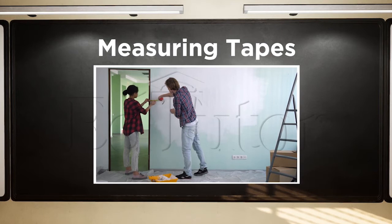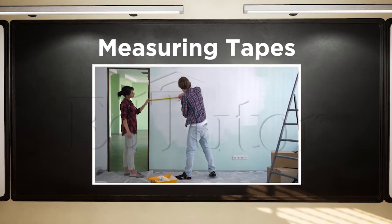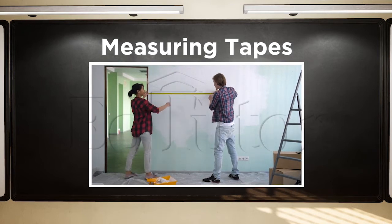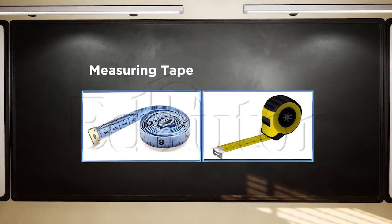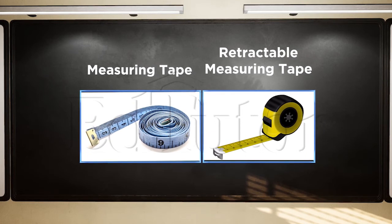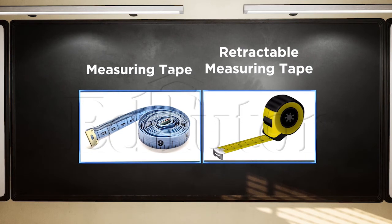Measuring tapes can be used to measure distances or lengths of up to several hundred meters. There are two different types of measuring tapes: one is the measuring tape and the other is a retractable measuring tape, which is used by carpenters.